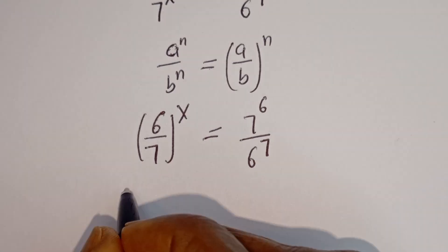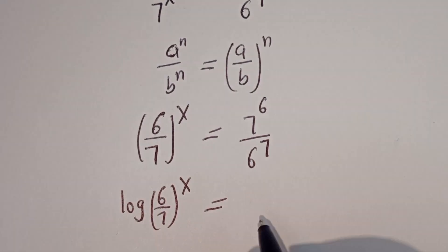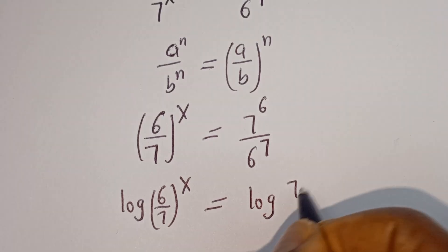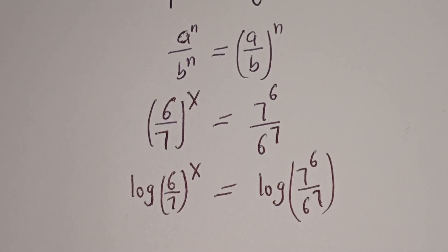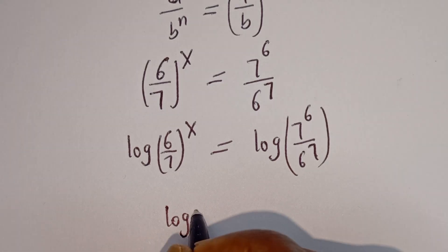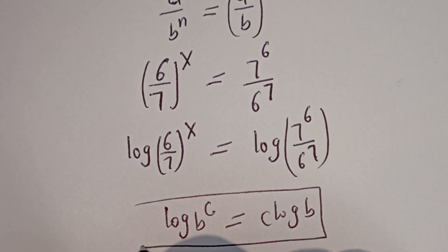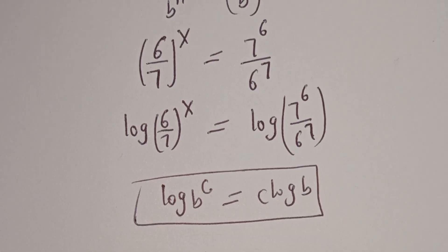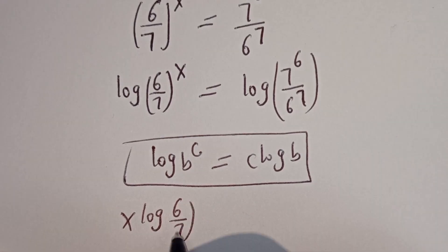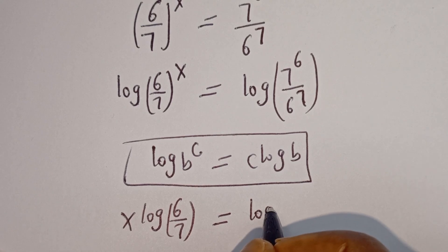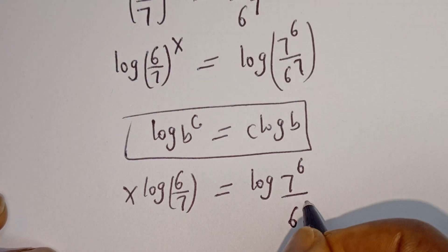Now, let's take the log of both sides. From here we have log of (6/7) to the power of x is equal to log of 7 to the power of 6 divided by 6 to the power of 7. If you have log b to the power of c, this is equal to c log b. Then this can be written as x log(6/7) is equal to log of 7 to the power of 6 divided by 6 to the power of 7.